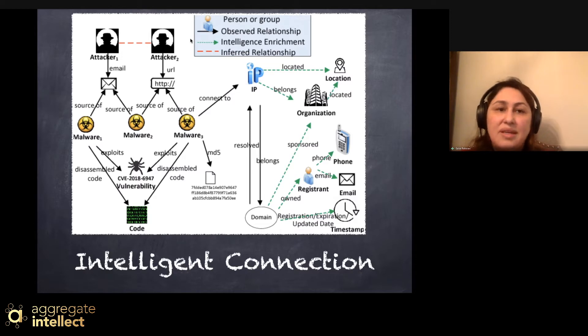For example, in this slide, you can see attacker one and attacker two. They use two different techniques to attack. One of them uses web pages, the other one uses emails to attack the organization. But if you look at their model, their code, their IP, and decode all that information, you would eventually lead to the same organization.